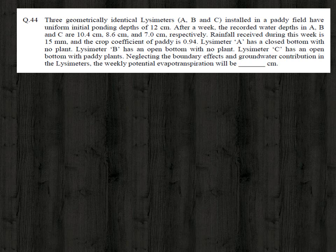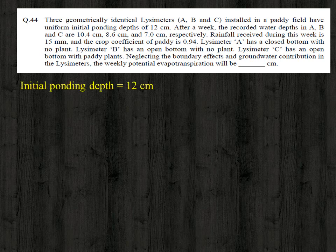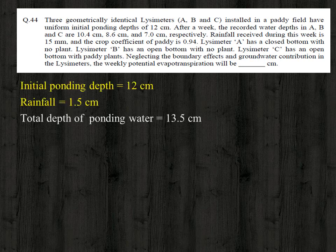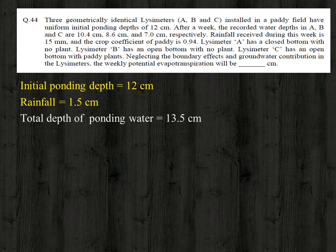The question is to find the weekly potential evapotranspiration. Lysimeters are used to measure evapotranspiration. The initial ponding depth is 12 cm, and since 15 mm (1.5 cm) of rainfall was received during the week, the effective initial depth is 12 + 1.5 = 13.5 centimeter.